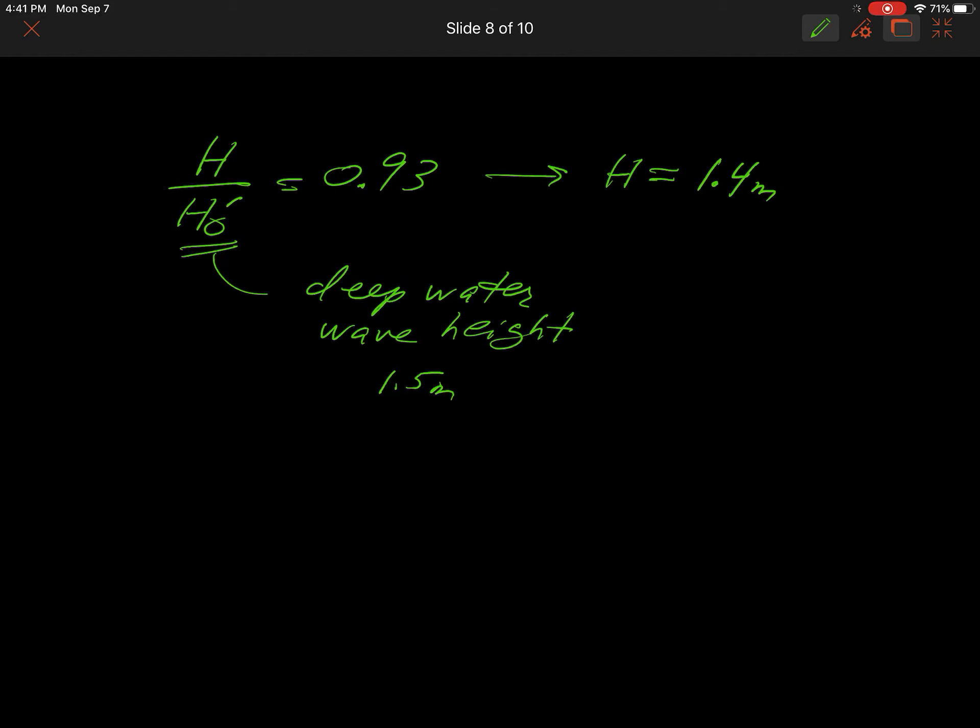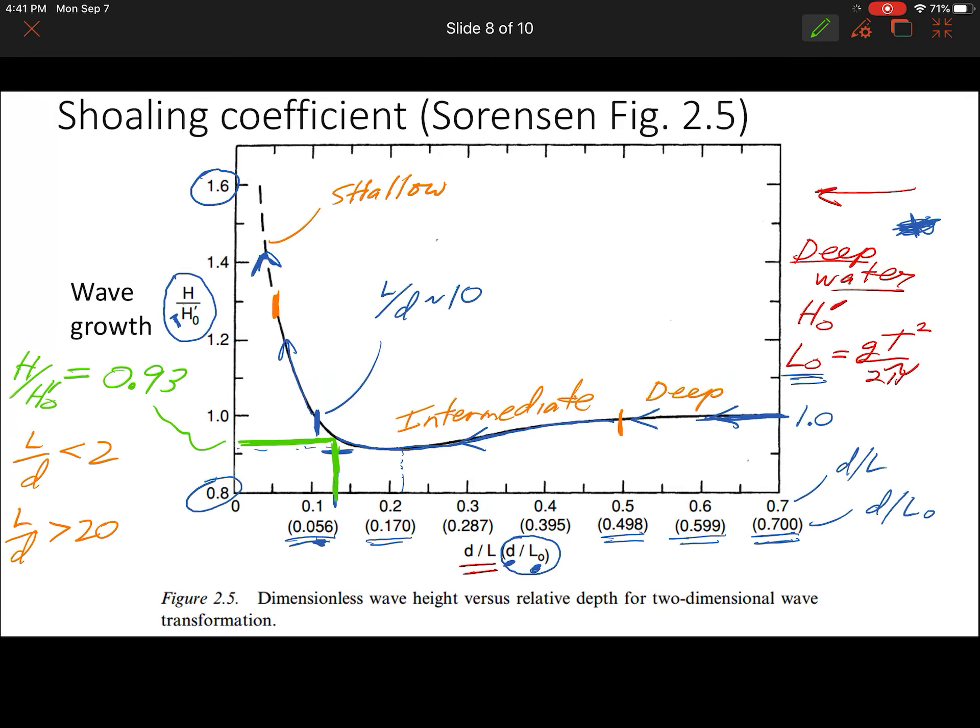A couple of key things to remind yourself of with this is that it's only for waves that are going from deep water into another depth. It could go from deep to deep, or deep to intermediate, or deep to shallow, wherever it ends up on this graph.